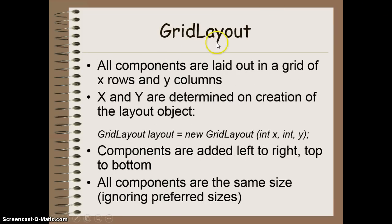The second Layout Manager is Grid Layout. This divides your panel into a grid of X rows and Y columns, determined when you create the object. The constructor takes two extra parameters: X for the number of rows and Y for the number of columns. Components are added left to right, top to bottom. Unlike Flow Layout, all components are the same size — the preferred size is ignored and everything expands or contracts to fit the grid evenly.